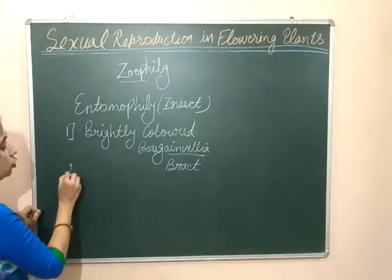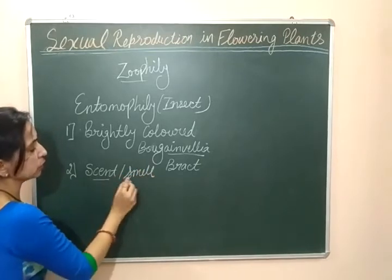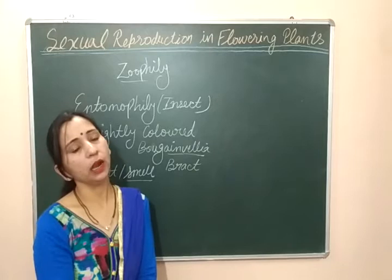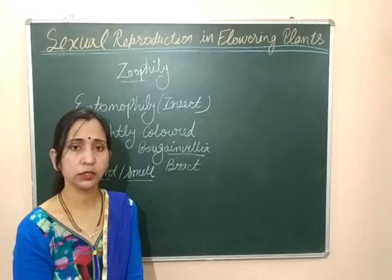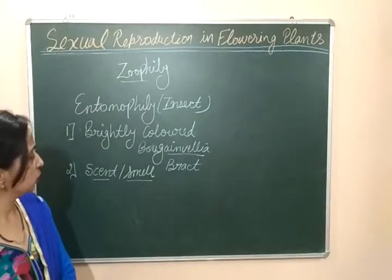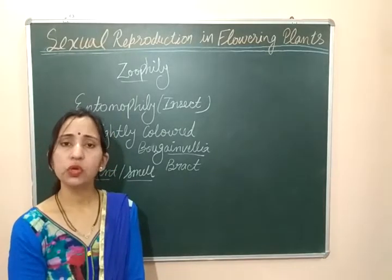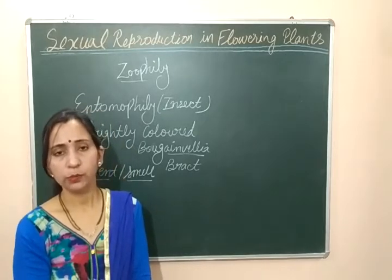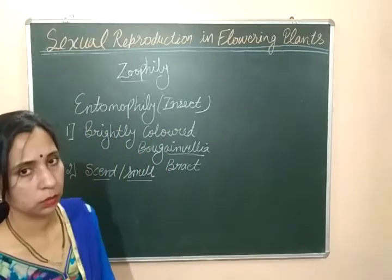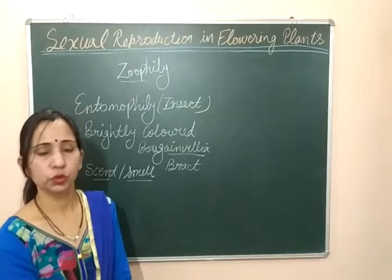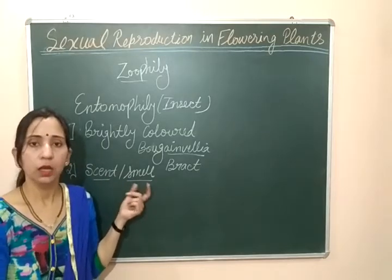The next characteristic is that the flower should have some scent or smell. There should be some scent or smell in the flower so that insects can be attracted. In the case of night-blooming flowers like jasmine, color doesn't matter at night, so they attract insects through their scent or smell. Scent and smell are very important to attract insects.